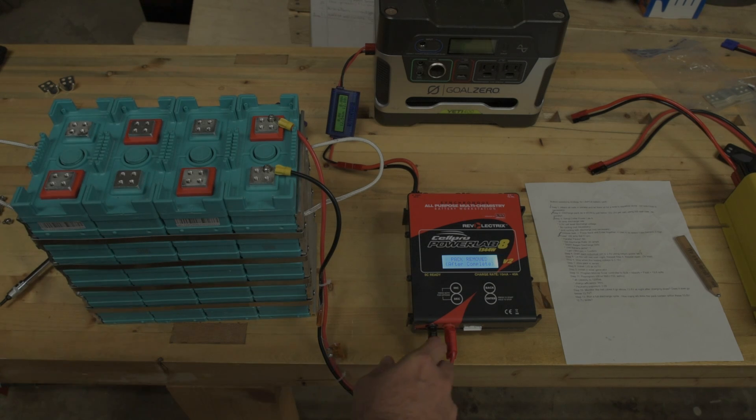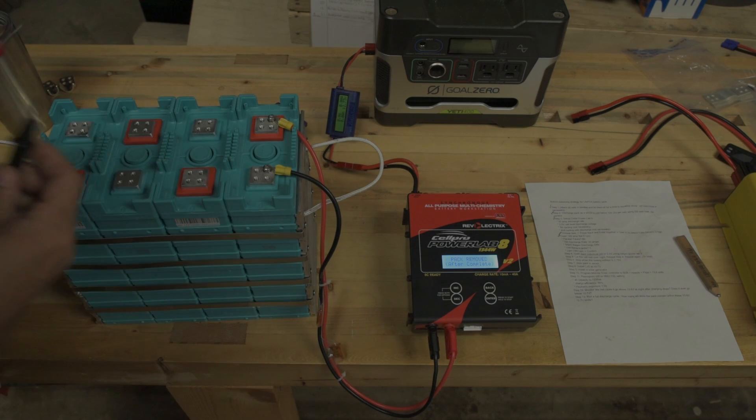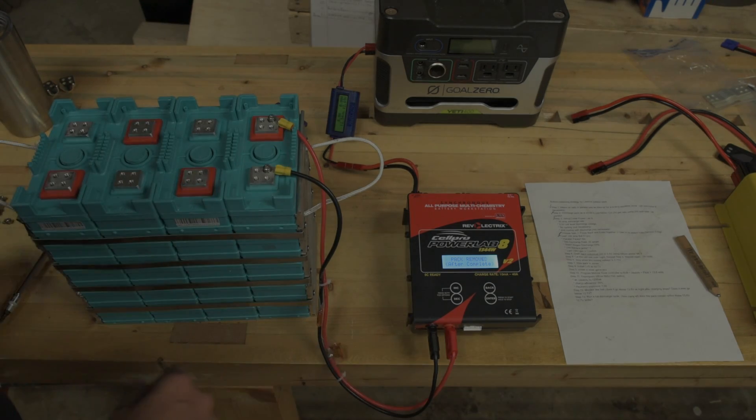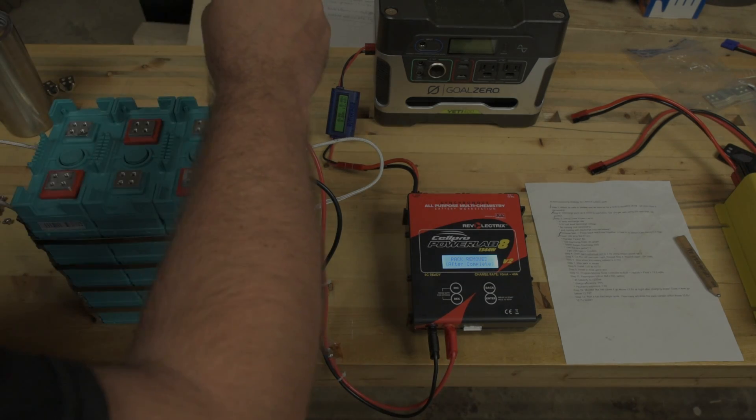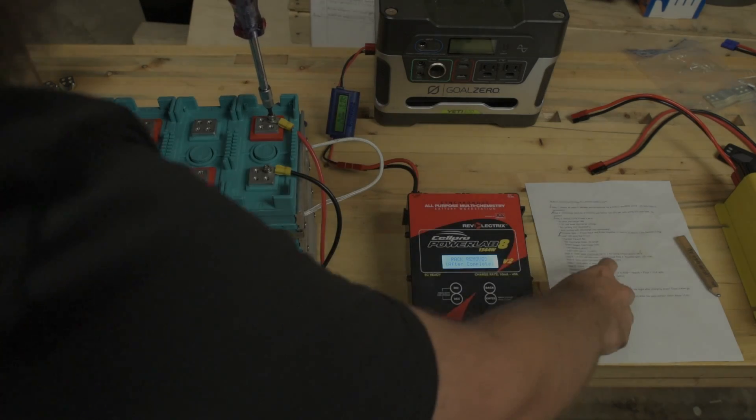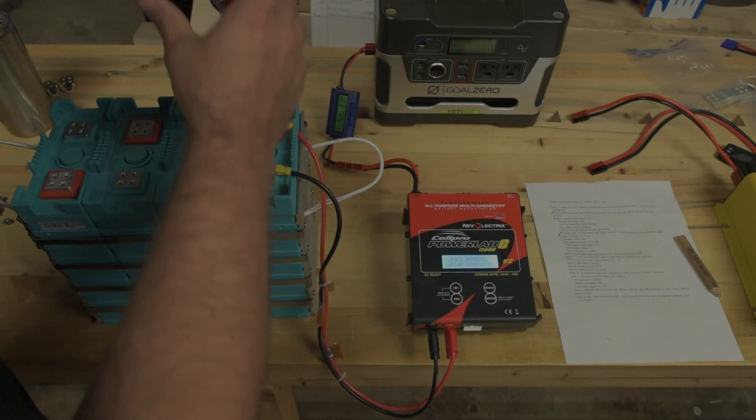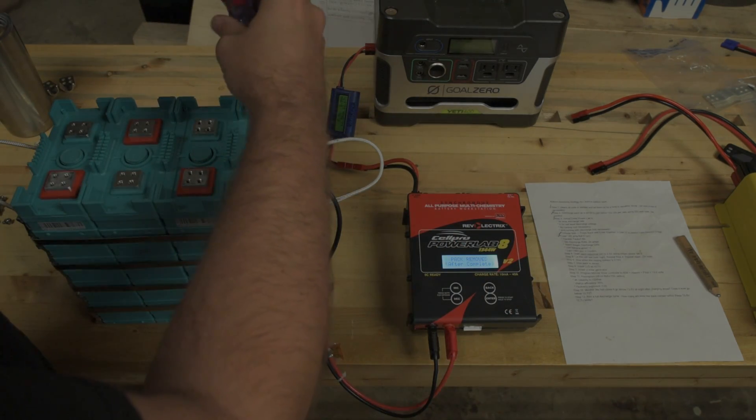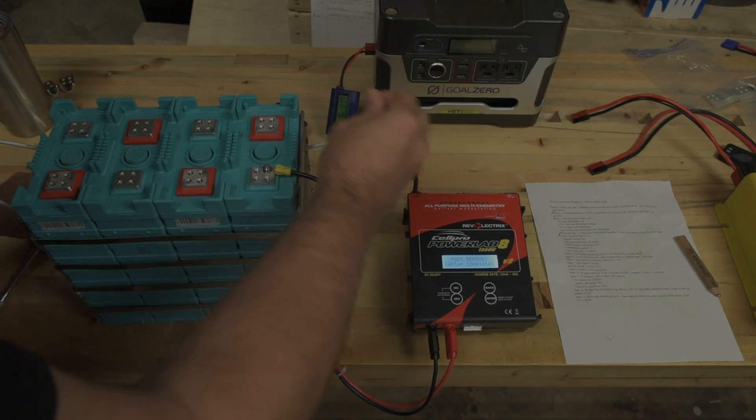2.62 - yeah, this is going to be fast today, just a couple of minutes each. Pack removed after complete. That's interesting, it says 2.6 volts. Let's move on to the other ones. Our goal is to get the resting voltage to 2.75 volts, so as long as we do that I think we're fine.